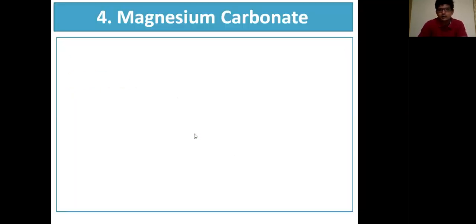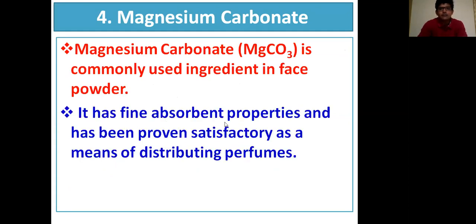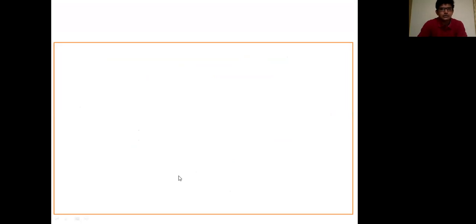The fourth constituent is magnesium carbonate, a commonly used ingredient in face powder. It has fine absorbent properties and has been proven satisfactory as a means of distributing perfumes. Both calcium carbonate and magnesium carbonate contribute to the development of a fluffy type of powder.